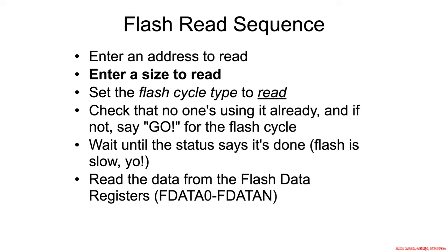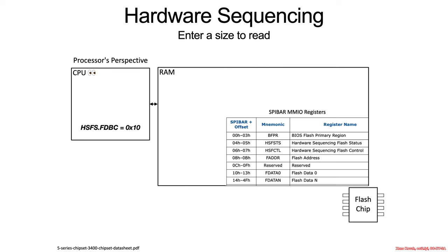Enter a size to read. Hardware sequencing flash status register flash data byte count equals hex 10, so it's going to read 16 bytes starting at flash linear address 0.